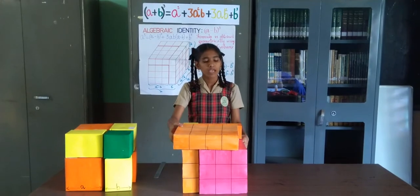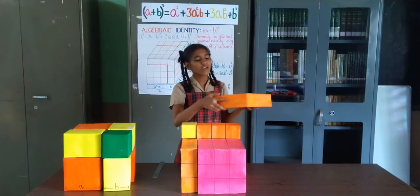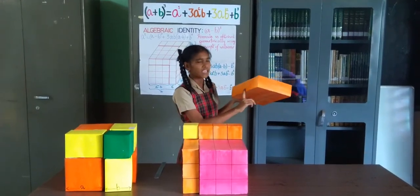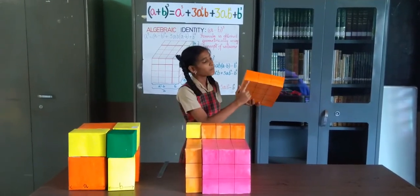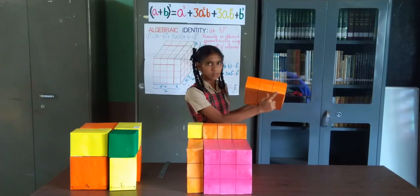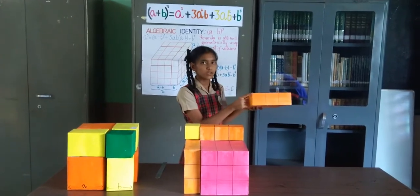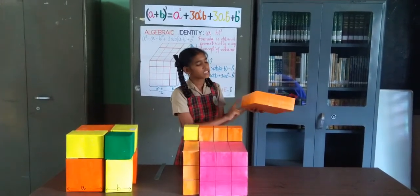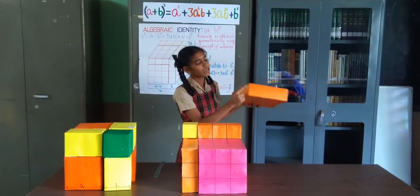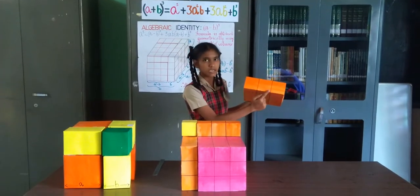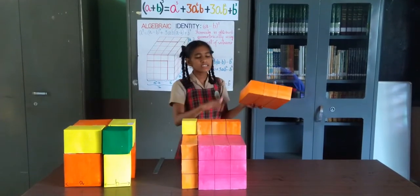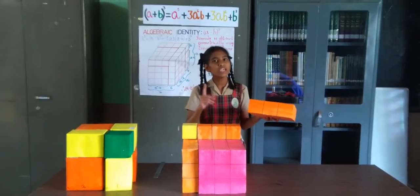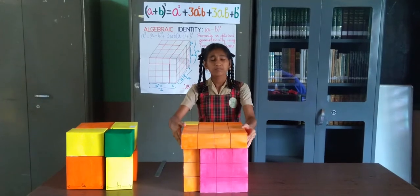Then we have a cube of side A minus B units, as C here, whose volume is A minus B the whole cube. Then we have three cuboids, each of length A units, breadth A minus B units, and height B units. So the volume of each is A times B times A minus B. Since there are three of them, we have 3AB times A minus B.